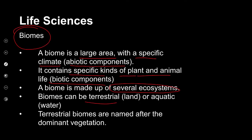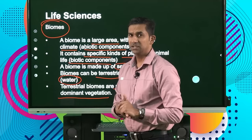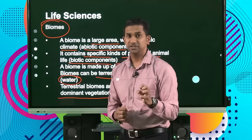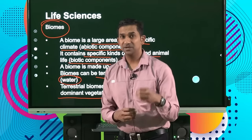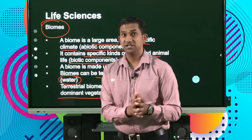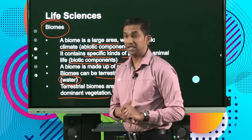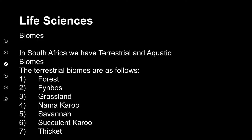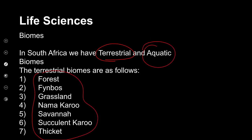Biomes can either be terrestrial, which are the ones found on land, or aquatic, the ones found in the water. Our terrestrial biomes are named after the dominant vegetation in that area. In the context of South Africa, we have different biomes — these terrestrial biomes are broken up into seven different areas, and our aquatic biomes are also broken up into three or four different areas.